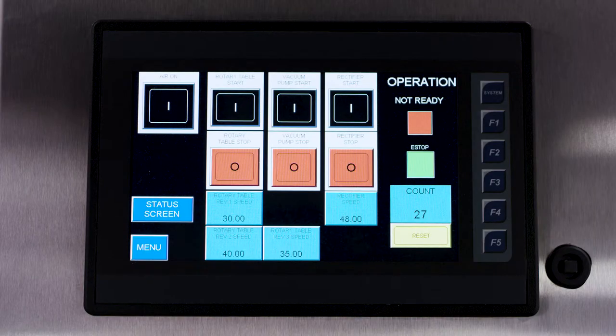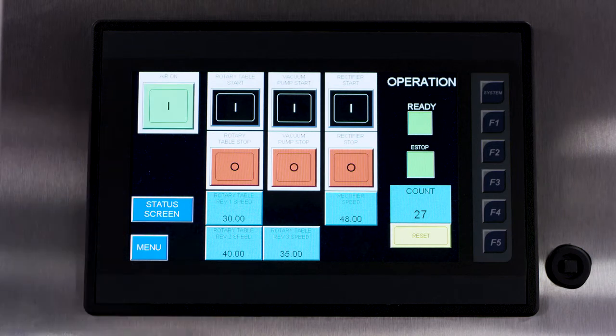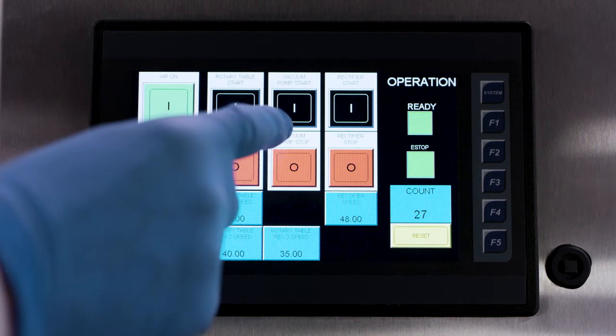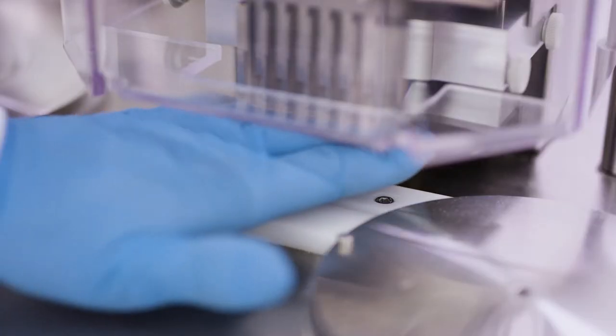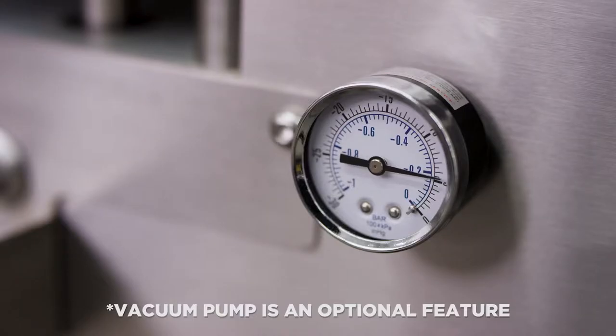After a few moments, the machine's status will display as ready. Press air on on the HMI screen. Now, press vacuum pump start and check the pressure by covering the vacuum shoe with hand. The vacuum gauge on the front of the machine should be adjusted between five and seven inches of mercury.